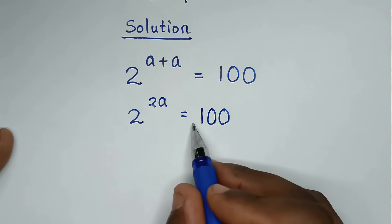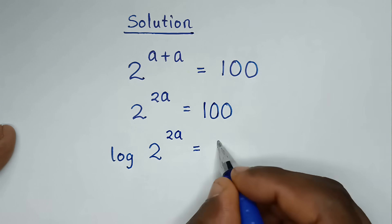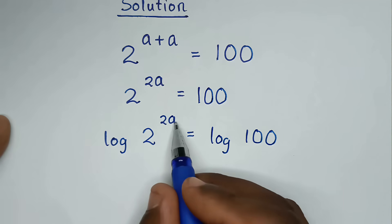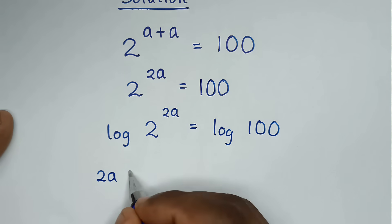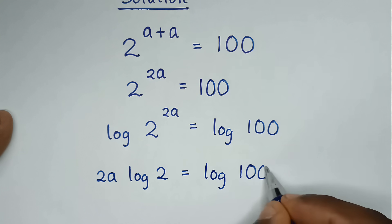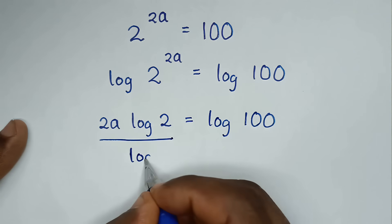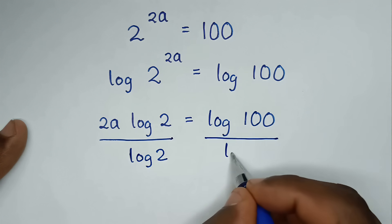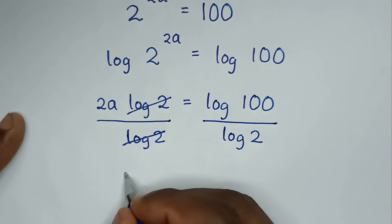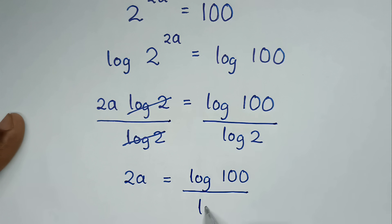From here, we'll apply log to both sides, so it will be log of 2 power 2a is equal to log of 100. Then this power of 2a moves to the front, so it will be 2a times log of 2 is equal to log of 100. Then we divide by log of 2 on both sides, so this log of 2 cancels, giving 2a is equal to log of 100 over log of 2.